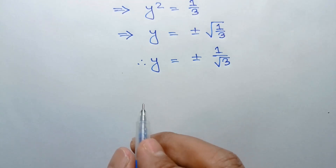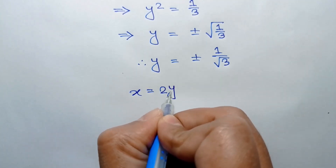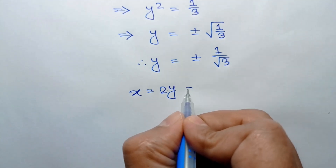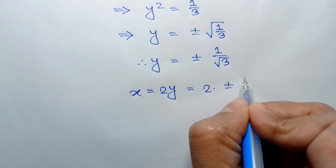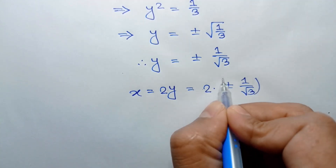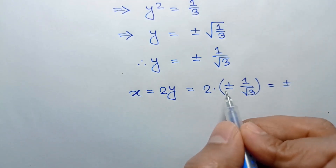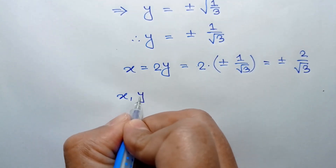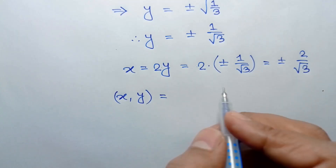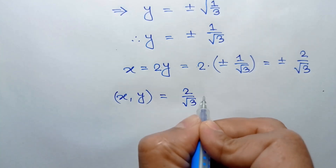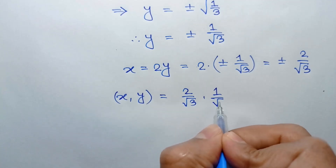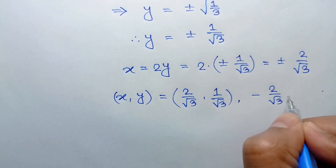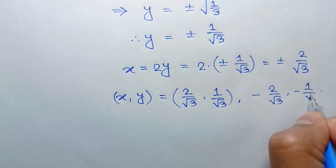From equation 5, x equals 2y. Substituting y equals plus or minus 1 over square root of 3, we get x equals 2 times plus or minus 1 over square root of 3, which is plus or minus 2 over square root of 3. So when x equals positive 2 over square root of 3, y equals positive 1 over square root of 3; and when x equals negative 2 over square root of 3, y equals negative 1 over square root of 3. These are the two solutions.